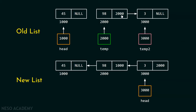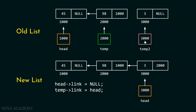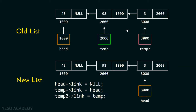With temp2 pointing to the third node, we can update the second node's link part. Then we update the third node's link part using the same approach. After updating the third node's link, we move the head pointer to the right, and the whole three-node linked list is now reversed.